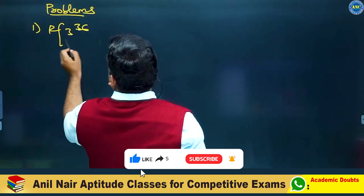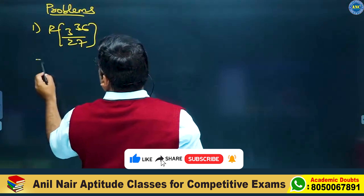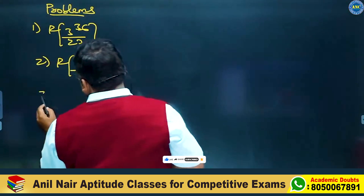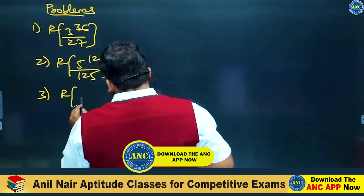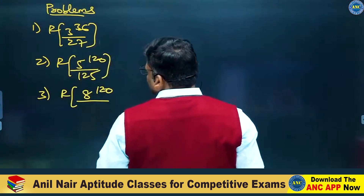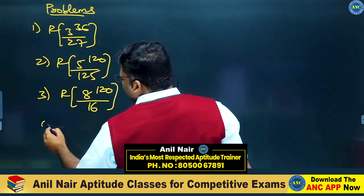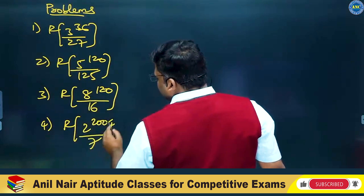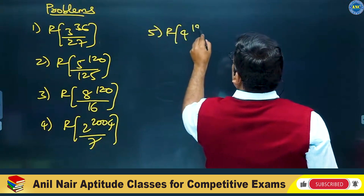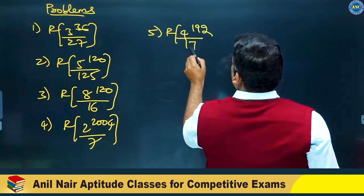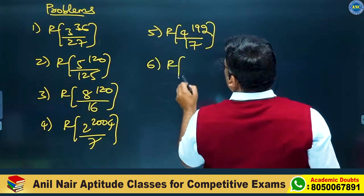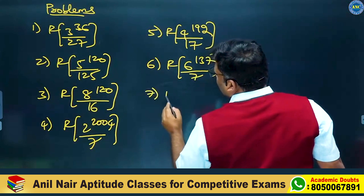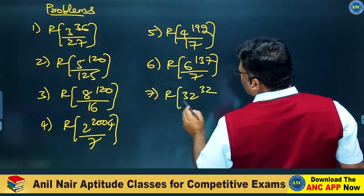Problems: 3 power 36 divided by 27, 5 power 120 divided by 125, 8 power 120 divided by 16, 2 power 2004 divided by 7, 4 power 192 divided by 17, 6 power 137 divided by 7, 32 power 32 divided by 11.